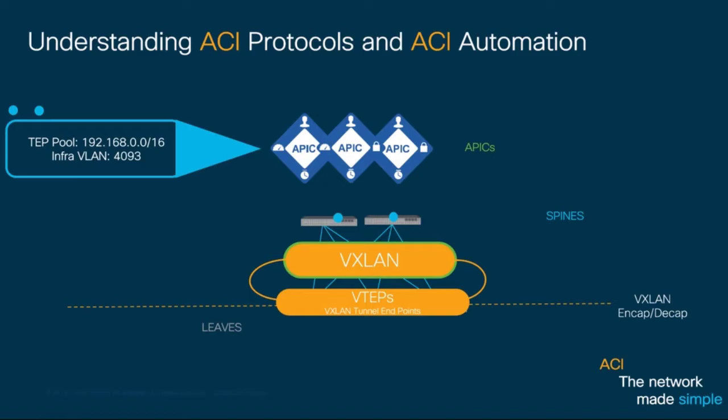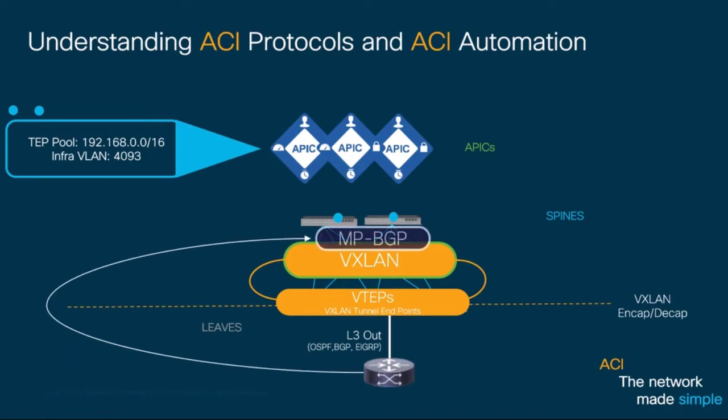Then, if for any reason you decide to connect a Layer 3 link to your ACI fabric such as an external router, ACI also automatically configures MP-BGP to redistribute those external routes into ACI and uses the spines as BGP route reflectors to propagate such routes. This allows us to have isolated protocols for underlay and external routing within the same fabric.